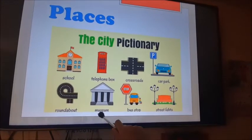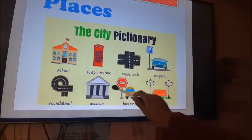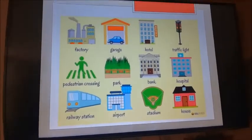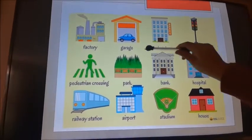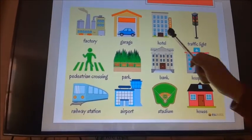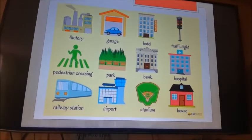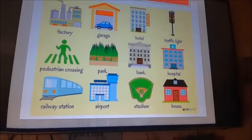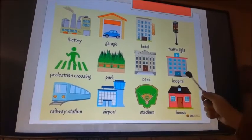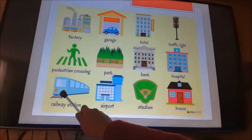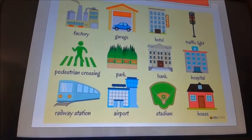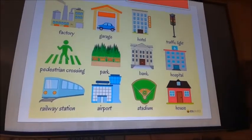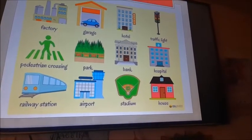'Museum' — museo. 'Bus stop' — una parada de bus. 'Street lights' — las luces de la calle. 'A factory' — una empresa. 'Garage' — garage. 'Hotel' — hotel. 'Traffic light' — semáforo. 'Pedestrian crossing' — cruce peatonal. 'The park' — el parque. 'The bank' — el banco. 'Hospital' — el hospital. 'Railway station' — parada de tren. 'Airport' — aeropuerto. 'Stadium' — estadio. 'House' — where do you live? — en tu casa.